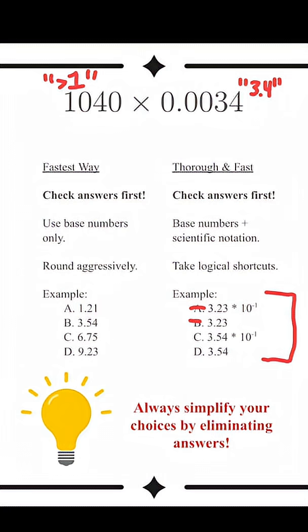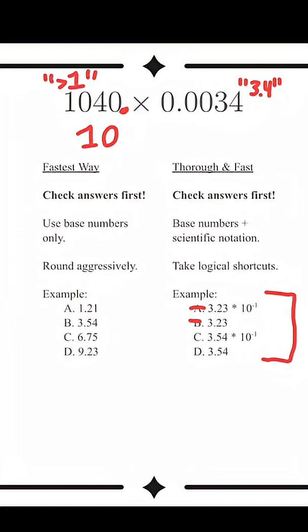Next, between C and D, we need to look at the scientific notation. Moving the decimal over, 1040 is basically just 10 to the 1, 2, 3. And this number is 3.4 times 10 to the negative 1, 2, 3.